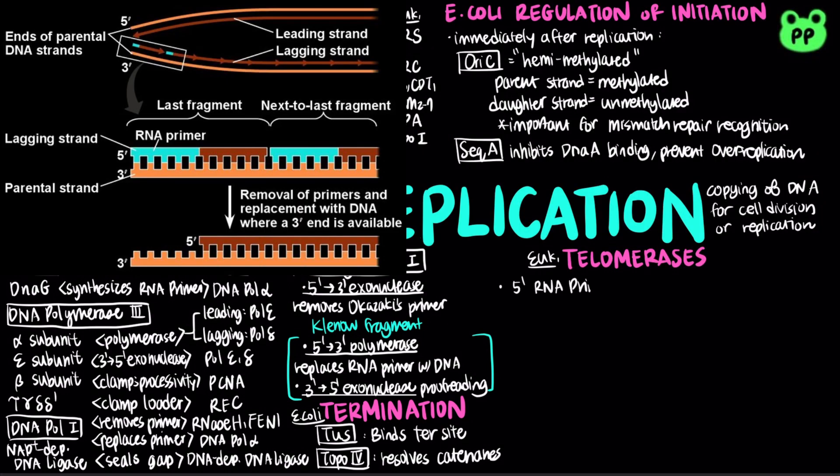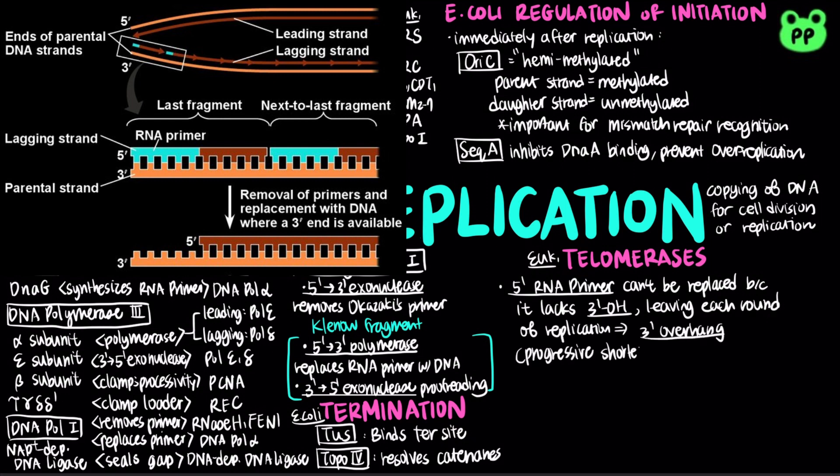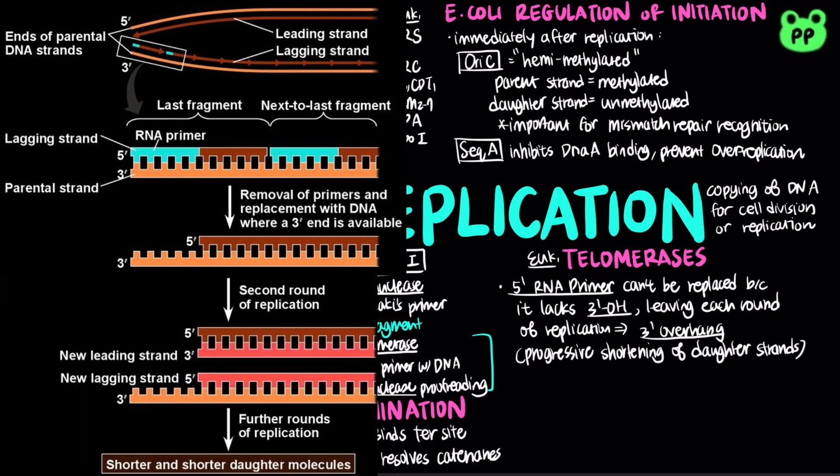During each round of DNA replication, the RNA primer at the 5' end cannot be replaced by DNA polymerase, because it lacks a 3' OH, leaving a 3' overhang after each round of replication, causing progressive shortening of daughter molecules.